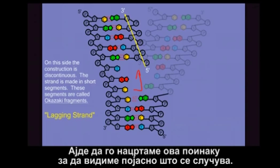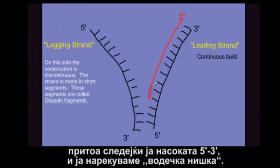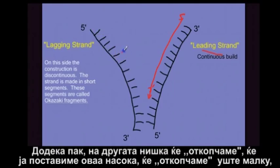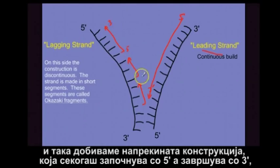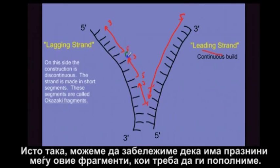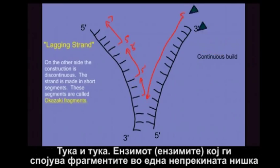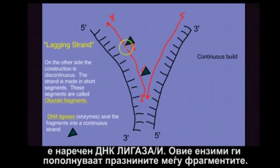Let's draw this a little differently so we can see better what will happen. On the leading side, we have a continuous build as we follow the molecule unzipping — continuous build from the five prime to the three prime end. But on the lagging side, we unzip, build in this direction, unzip some more, build up again, unzip some more, and build up again. It's a discontinuous build, each time building from five prime to three prime. We have these fragments, and we call them Okazaki fragments. There are also gaps between these fragments that we need to fill in. The enzyme that ties the Okazaki fragments together is called DNA ligase. Ligase fills in the gaps between the Okazaki fragments, attaching the sugar-to-phosphate backbone into a continuous strand.